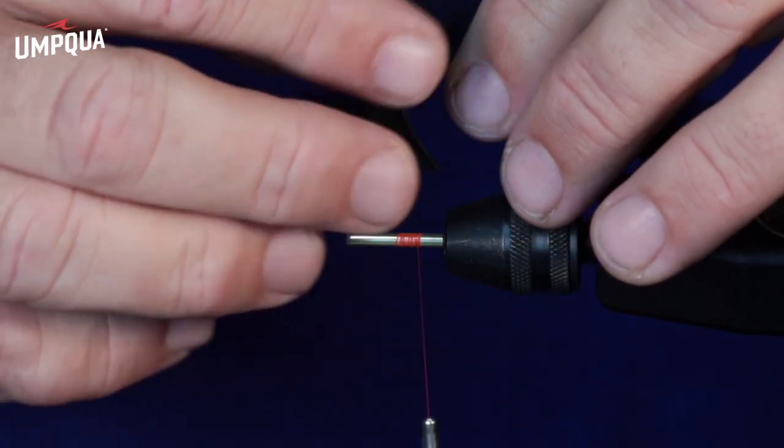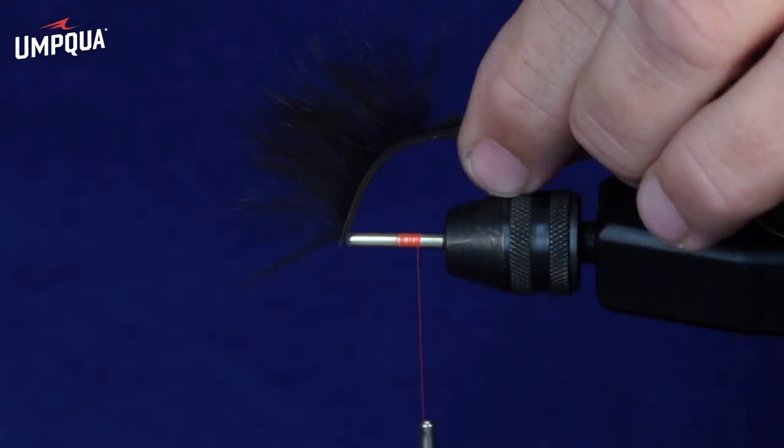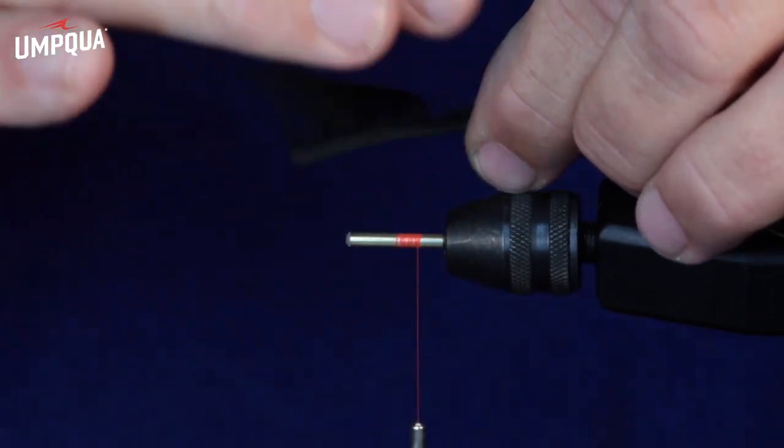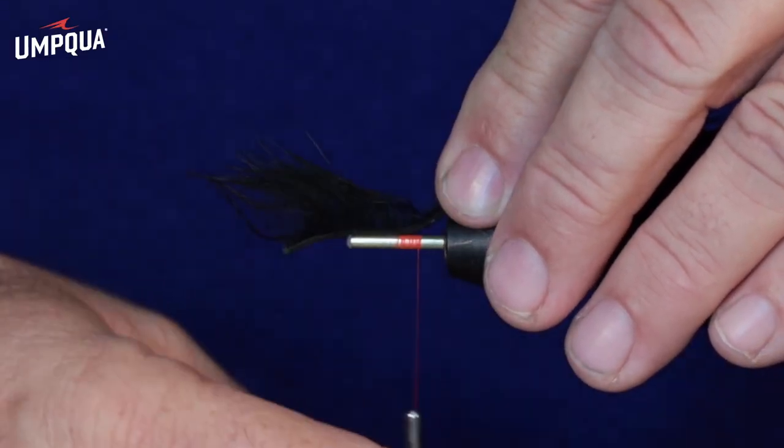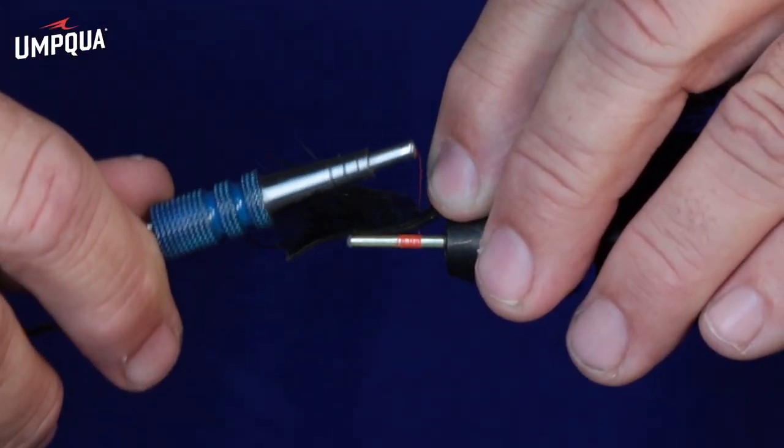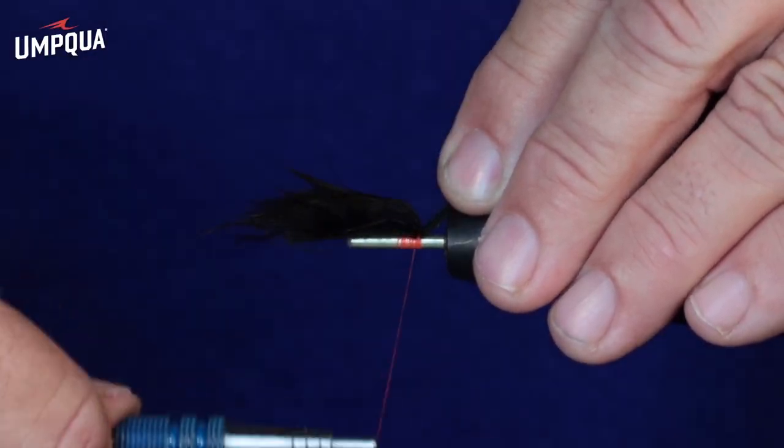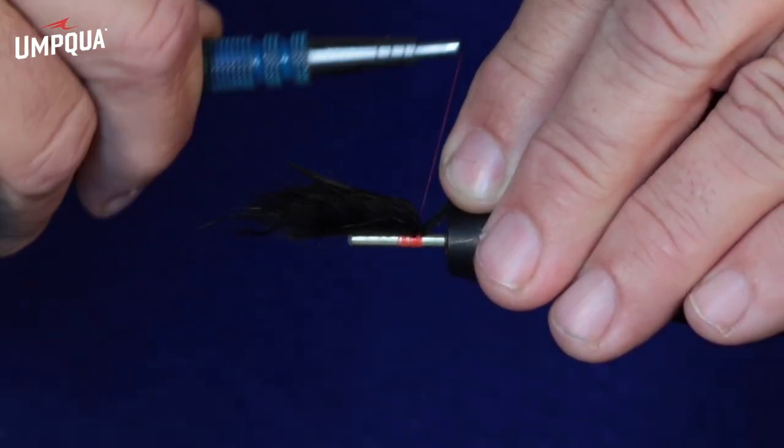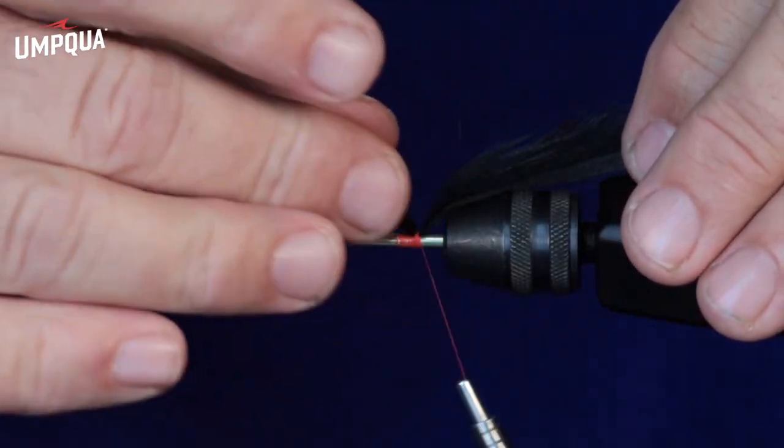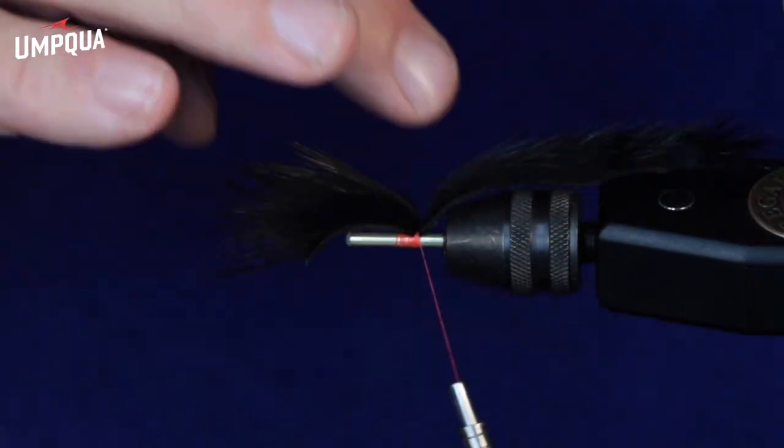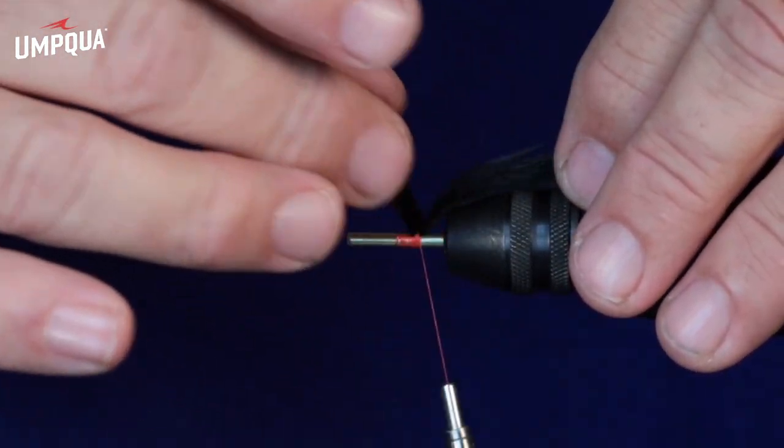And then we're going to take and find the middle of that. Just moisten it a little bit and lay it right on top and then we're going to lash that down with a number of very good firm securing wraps. Now this isn't waste right here. We're going to use this part of the rabbit strip. So don't cut it off. Hang on to it.